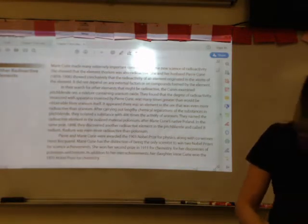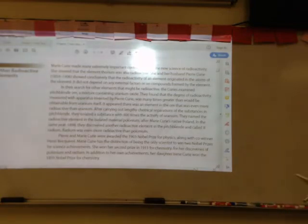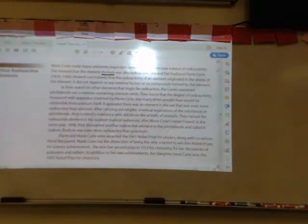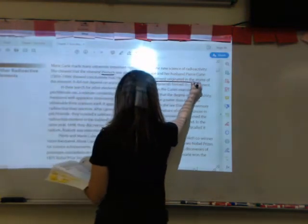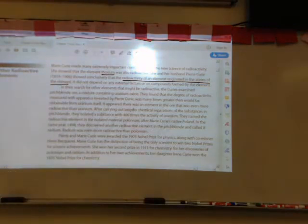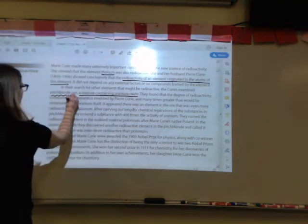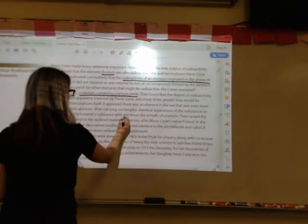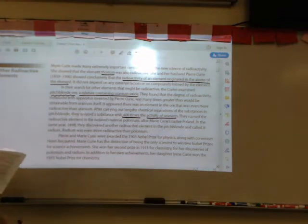Let's talk about other radioactive elements. Marie Curie made an extremely important contribution to radioactivity. She showed that the element thorium was also radioactive. Her and her husband, Pierre Curie, showed that the radioactivity of an element originated in the atoms of the element. It didn't depend upon any external factors or on the compounds formed by the element. In their search for other elements that might be radioactive, they examined pitch blend ore, which is a mixture that contains uranium oxide. They found that the degree of radioactivity was a lot greater than what would be obtainable from uranium itself. So it appeared that there was an element in this pitch blend ore that was more radioactive than uranium. After they did a lot of different experiments, they isolated a substance that was 400 times the activity of uranium, and they named this polonium.